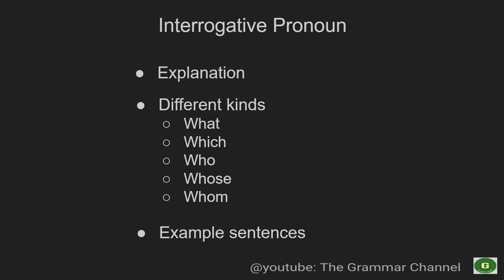Examples of indirect questions: Can you tell me what we are doing here? Do you know who that guy is? Notice the WH words appear in the middle of the sentence. Interrogative pronouns find their application in indirect questions as well. Another example: Can you tell me whom they have called? Do you know who that guy is? All these are indirect questions where interrogative pronouns appear in the middle of the sentence.